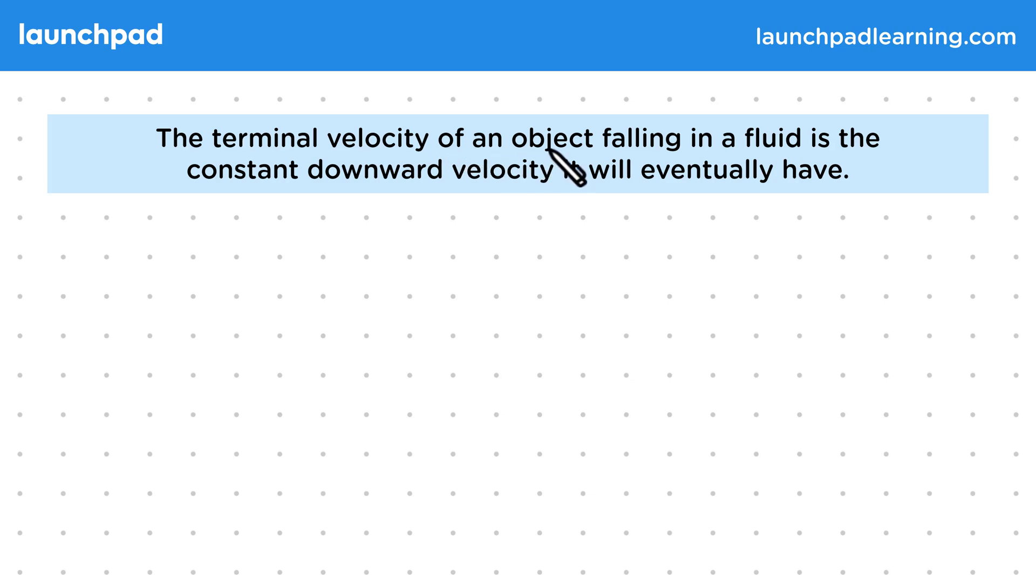The terminal velocity of an object falling in a fluid is the constant downward velocity it will eventually have. By a fluid, we mean a liquid or a gas, substances where particles are free to flow and move around.